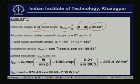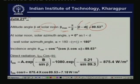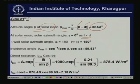First I am doing the calculation for June 21st, so I take the declination as 23.5 degrees. At solar noon we calculate the solar azimuth angle. Since we are at solar noon, the solar azimuth angle is either 180 or 0 degrees — it is 0 degrees if the latitude is less than the declination. So we take the solar azimuth angle to be 0 degrees in this case.